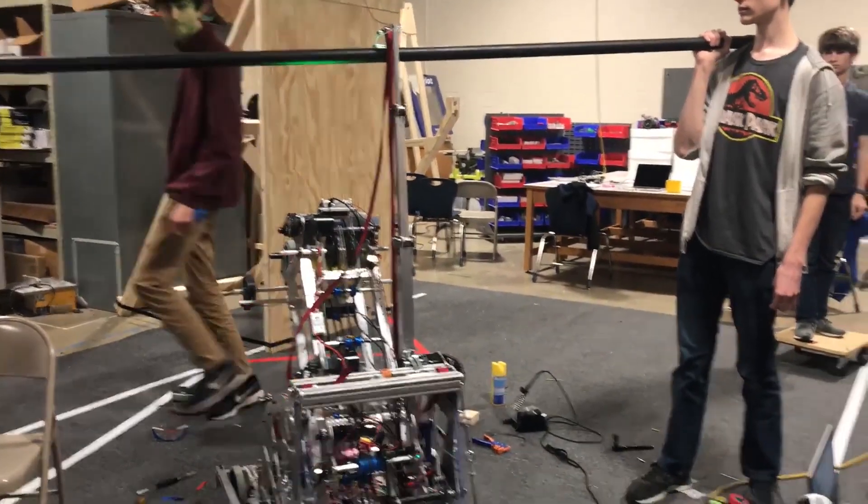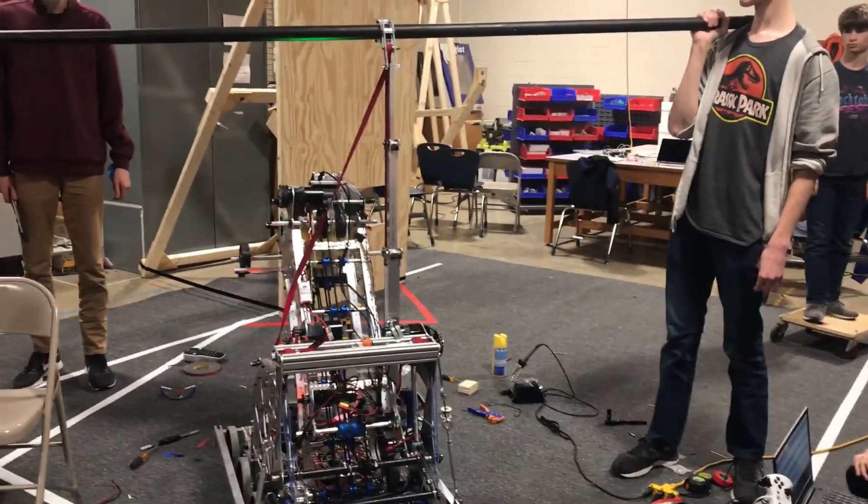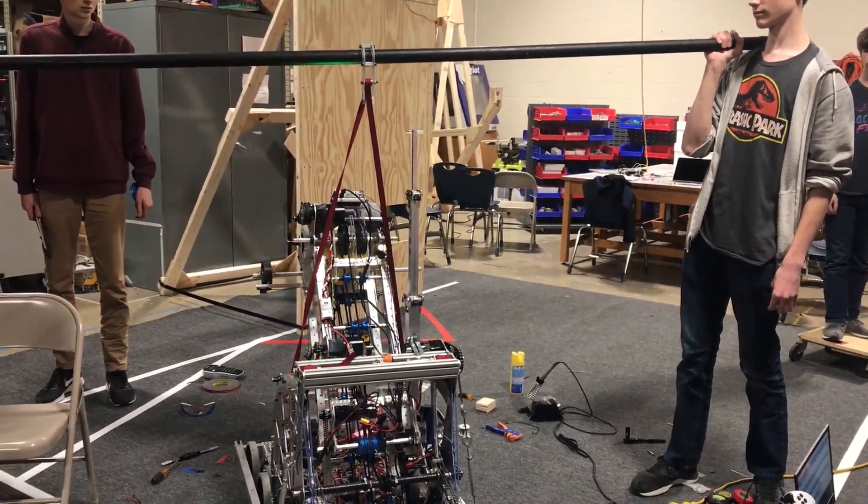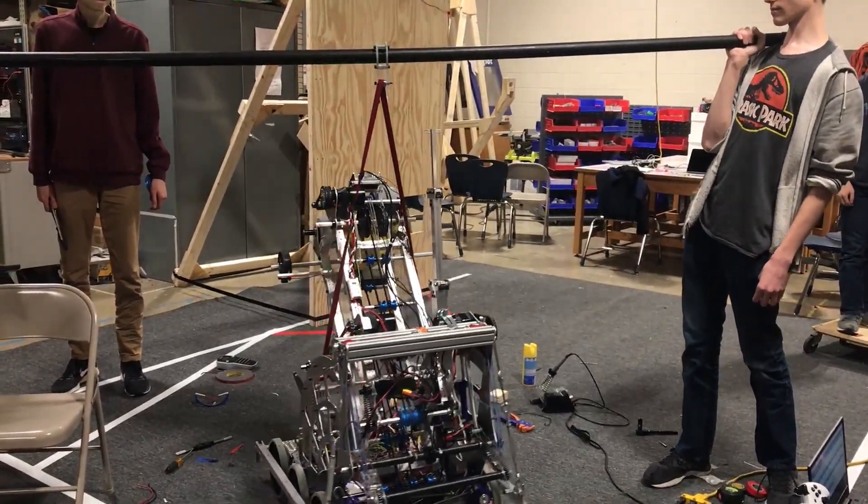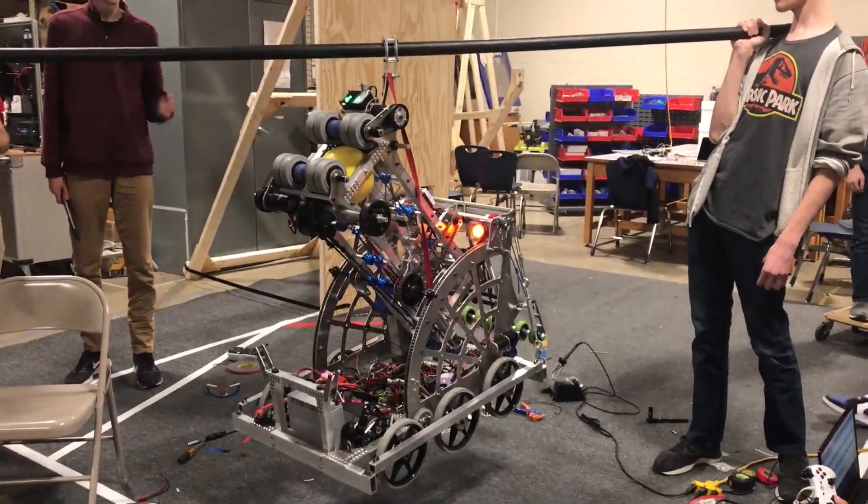On our 2020 robot, we used a winch to help us do a pull-up of sorts at the end of a match. We attached a strong belt to a hook that we made ourselves using our CNC router. Once the hook was on the bar, we had a motor spin a piece of hex shaft, thus winding up the belt and allowing us to climb.